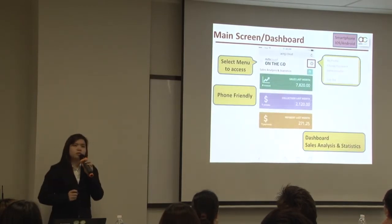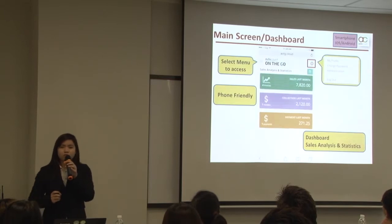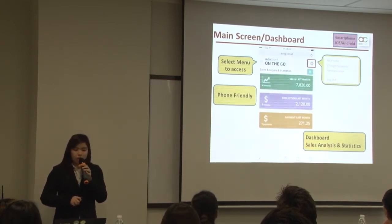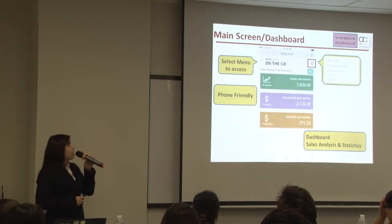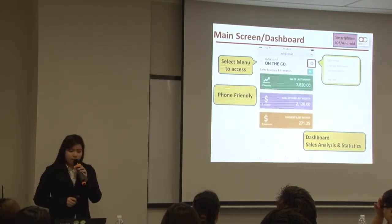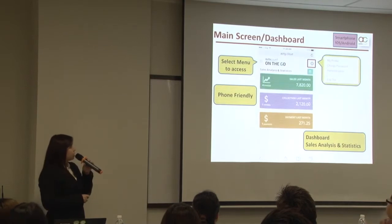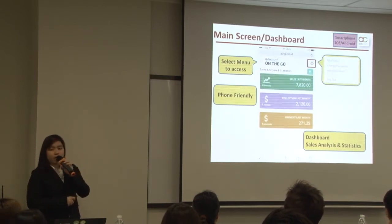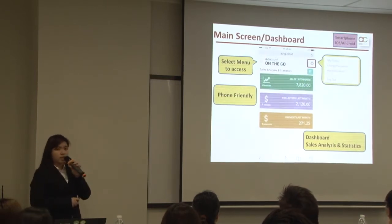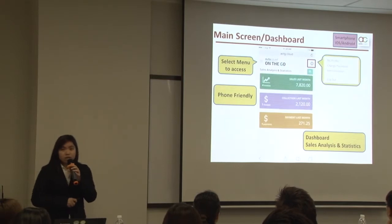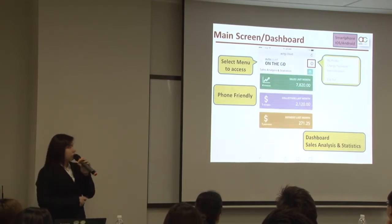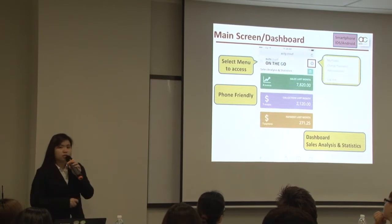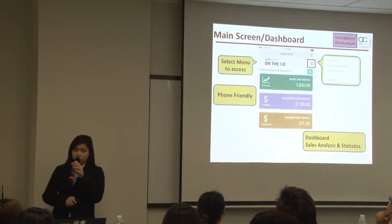This is the main screen if you are using your smartphone to log in to AOTG. The layout is phone-friendly. You can get the menu button — just click on that icon and select the menu to access. Similarly, there is also a setting button on the top right corner, so you may click on the setting to do whatever setting you want.